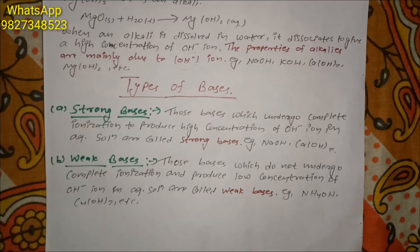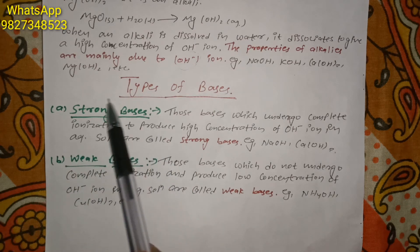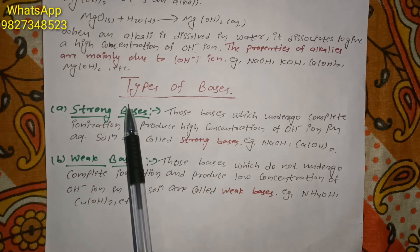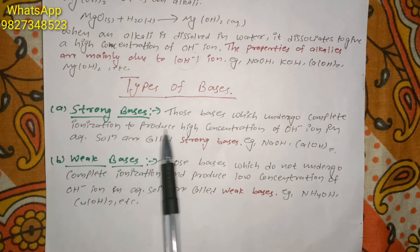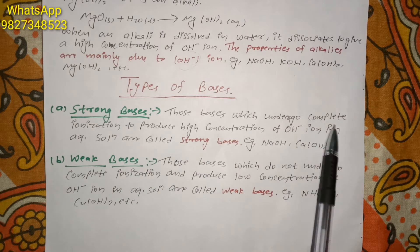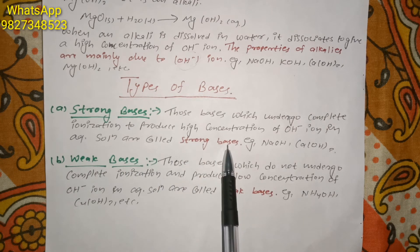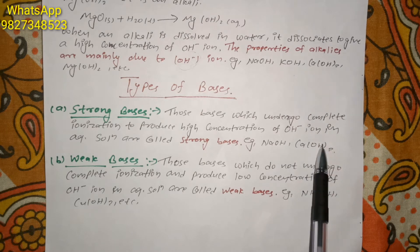Bases can be divided into two types: strong bases and weak bases. Strong bases are those bases which undergo complete ionization to produce a high concentration of hydroxyl ions in aqueous solution. Examples of strong bases are sodium hydroxide, calcium hydroxide, and potassium hydroxide.